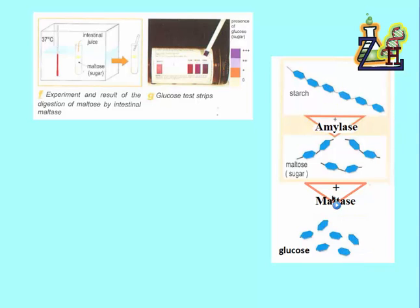Here also we see how digestion is gradual. It's done step by step. Starch cannot be directly changed into glucose. It first has to be transformed to maltose by amylase, and maltose will be changed into glucose by maltase.